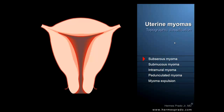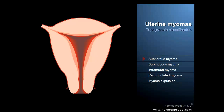To understand the variety and intensity of symptoms, it's important to know how these tumors are classified according to their location in the uterine wall. This is a frontal view of the uterus. Here are the outlets of the fallopian tubes, and down here we see the cervix.